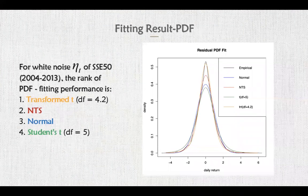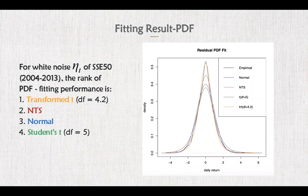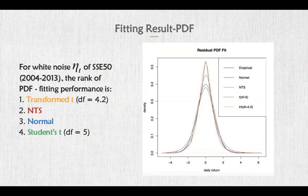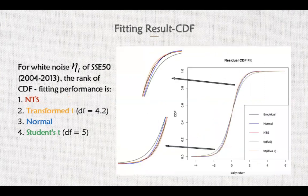Now let's move to the fitting result. In terms of the probability density function and the cumulative density function, we consider four different types of distributions to fit the white noise eta_t of SSE 50, which are normal, NTS, transform T with a degree of 4.2, and Student T with a degree of 5 respectively. From the plot on the right, the black line represents the empirical distribution, and we can see that this line lies between the transform T distribution and NTS distribution. Similarly, from the CDF plot, transform T distribution and NTS distribution fit the data better than the other two. In conclusion, both NTS distribution and transform T distribution can fit SSE 50 well.